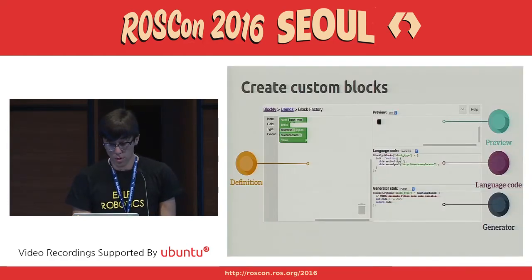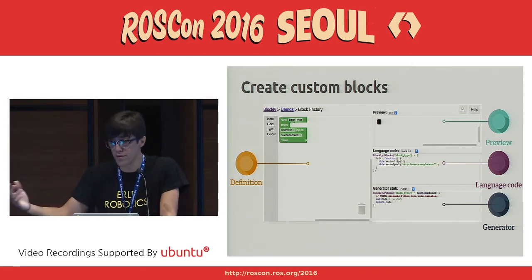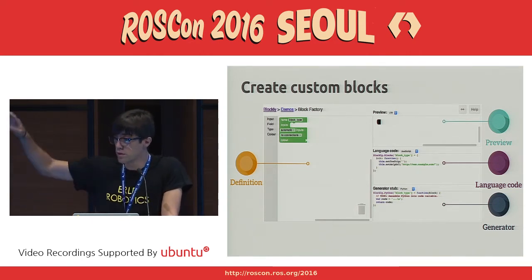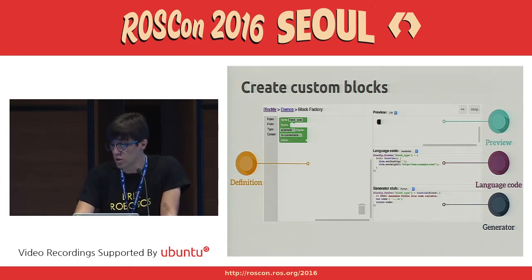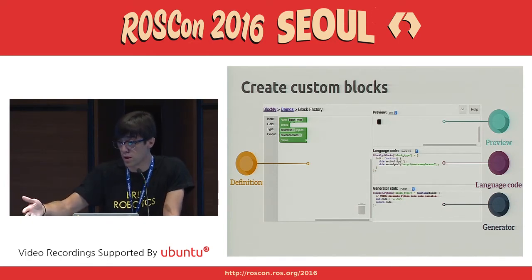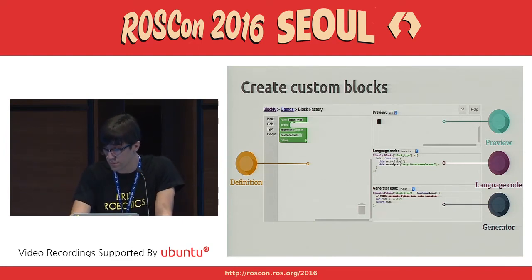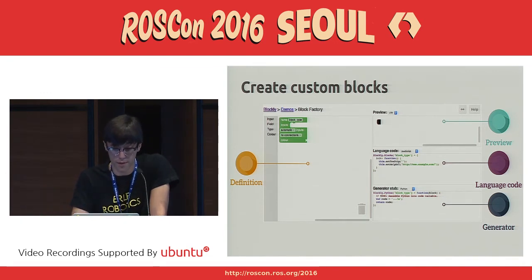If you would like to create your own blocks and you don't know JavaScript, we have an interface — the same as Blockly — where you can drag and move different blocks to the definition box. In the preview in the top right of the image, you can see the preview of the block you are creating. In the language code section, you will see the JavaScript code to include in the blocks folder. And in the last box, the generator box, you write your ROS code and include it in the generator file.